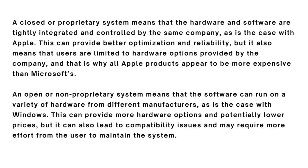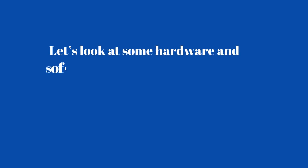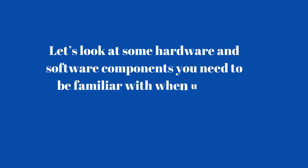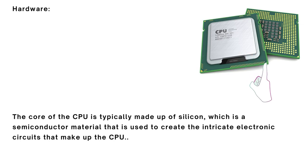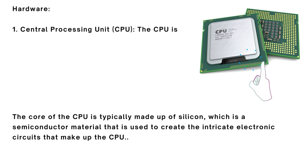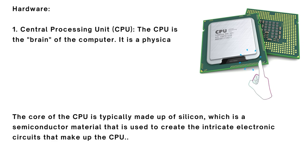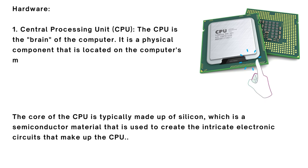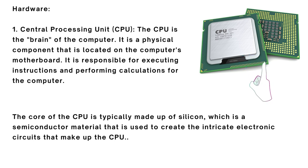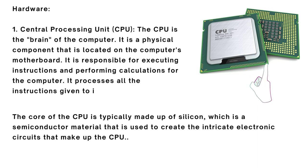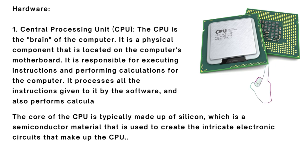Now let's look at some hardware and software components you need to be familiar with when using the computer system or smartphone in your digital literacy journey. Under hardware, the first is the central processing unit — CPU for short. The CPU is the brain of the computer. It is a physical component located on the computer's motherboard, responsible for executing instructions and performing calculations. It processes all the instructions given to it by the software.